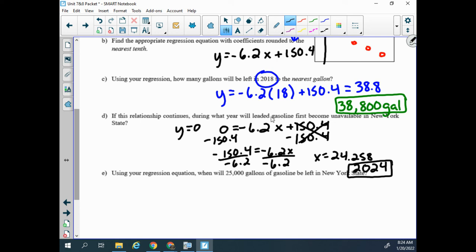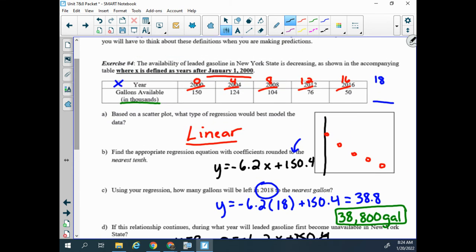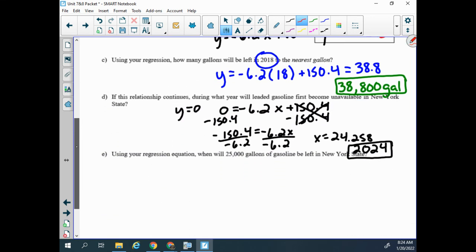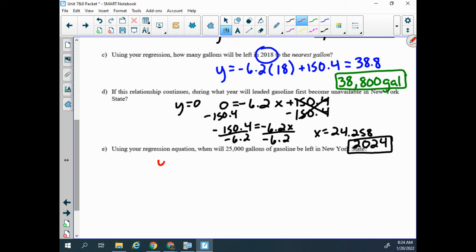Using your regression equation, when will 25,000 gallons of gasoline be left in New York State? Back up to my table, 25,000 in my table would go in as a 25 because that's how many thousands, and we're looking for the x value. So here we're going to set the equation equal to 25, because 25 is the y value.